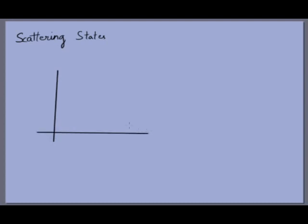Say you have a potential which goes to zero as x goes to infinity or minus infinity. If you give the particle an energy E greater than the maximum value of potential energy, then starting from the left the particle has some kinetic energy. At the peak the potential energy is maximum but some kinetic energy remains, so it goes beyond the hill and escapes to infinity. Whenever a particle can go off to infinity it is not bound between any two points — these are called scattering states.